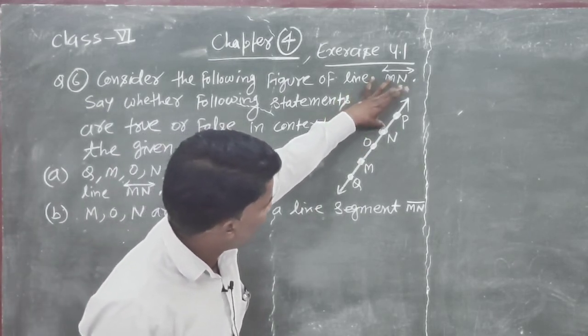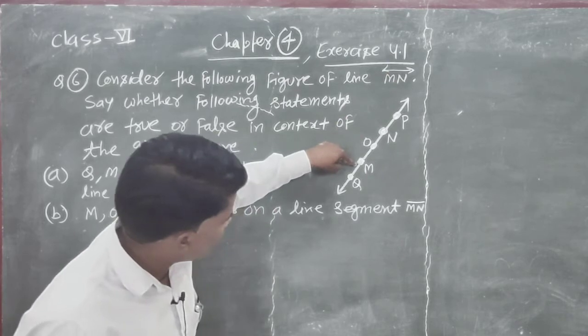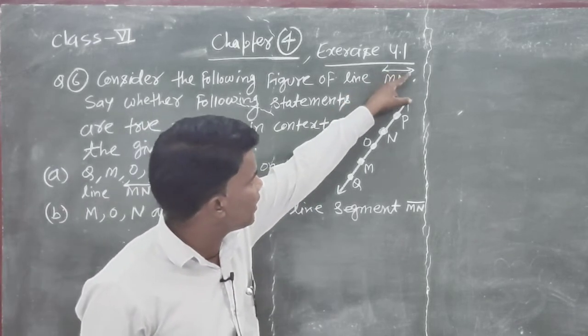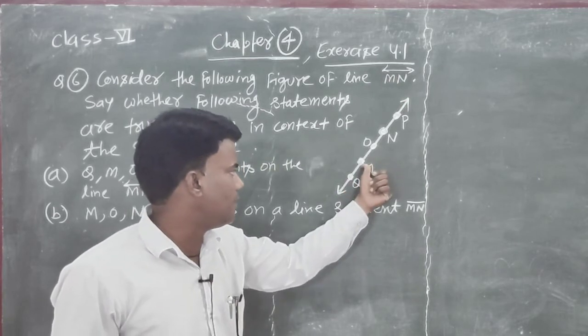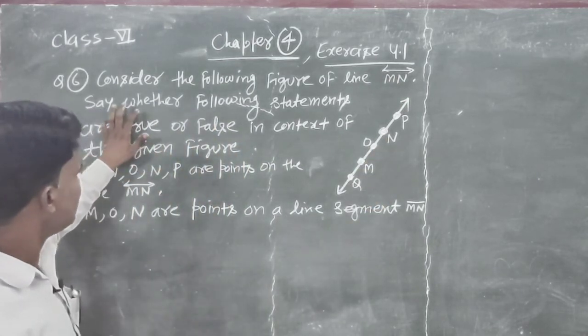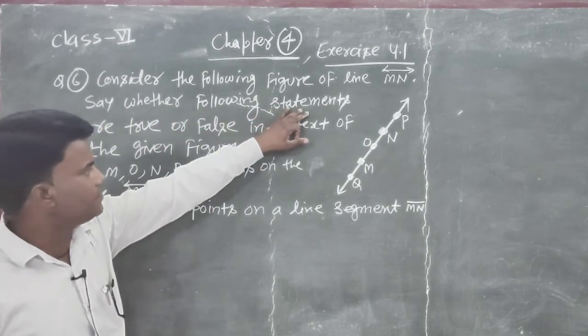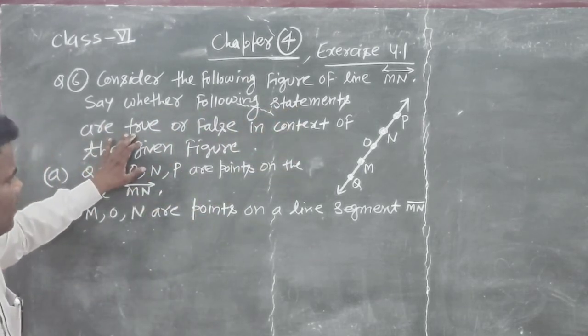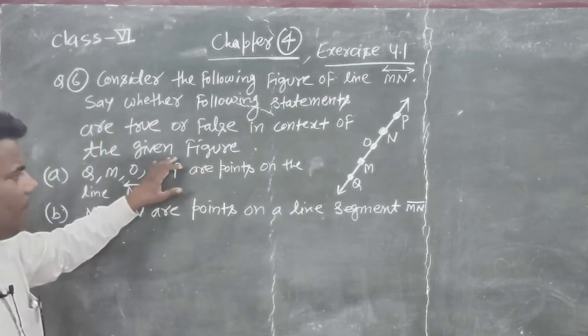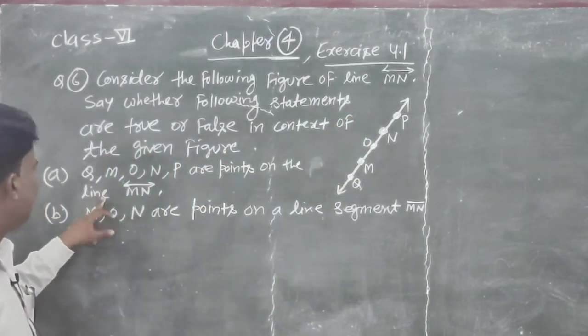It means M ko bhi aage extend karsakte hai, or M point ko bhi aage extend karsakte hai, because down side is kya hoata hai, arrow. So given figure MN koi line. Say whether following statements are true or false, in context of the given figure, this figure we are coding.